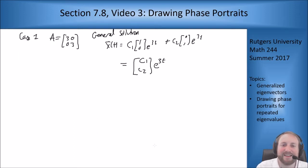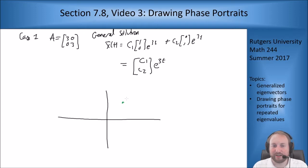I can rewrite this by combining stuff together as [c₁;c₂] times e³ᵗ. This says that wherever I start, whatever c₁ and c₂ I put in, I then continue on in a straight line through the origin either going back to the origin as t goes to minus infinity or going away from the origin as t goes to plus infinity, no matter where I started.